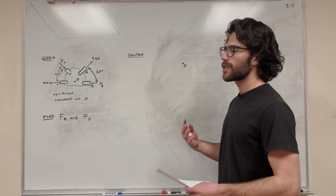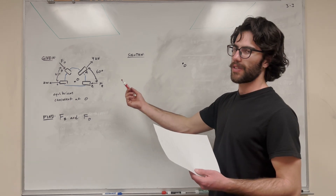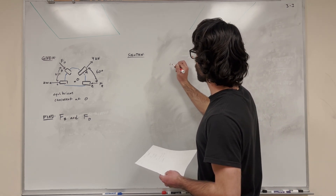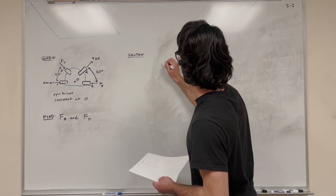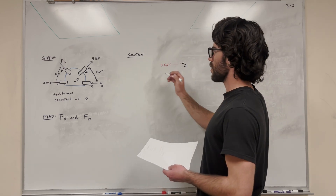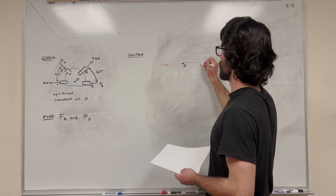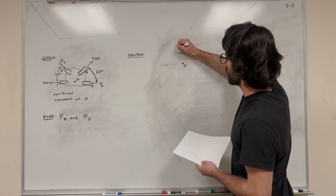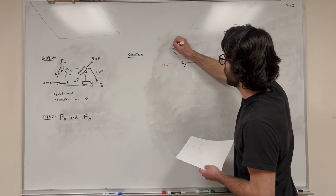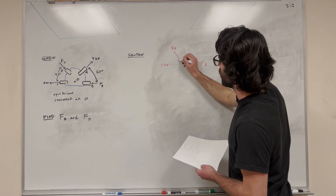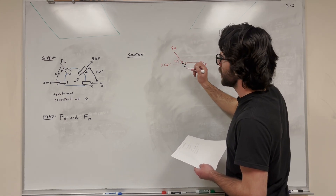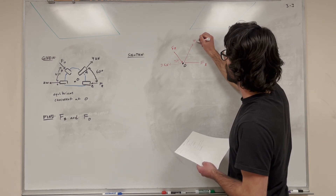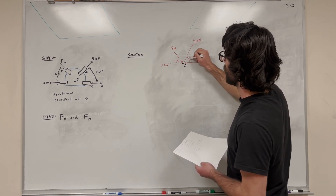We have two unknowns, and what we can do when we have two unknowns is write two equations. Those two equations are our equilibrium equations: sum of the forces in Y is equal to zero, and sum of the forces in X is equal to zero. So let me show you how we do that. We start with our free body diagram. We start with this force going to the left, which is that two kilonewton force, and we also have another force going to the left, which is force B. And force D is coming down at a 45 degree angle.